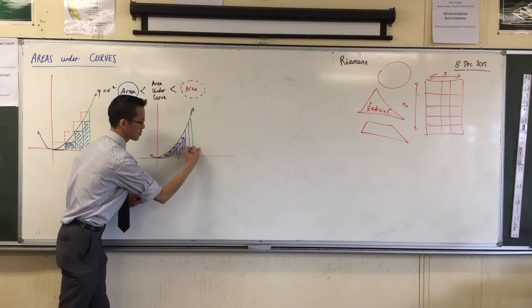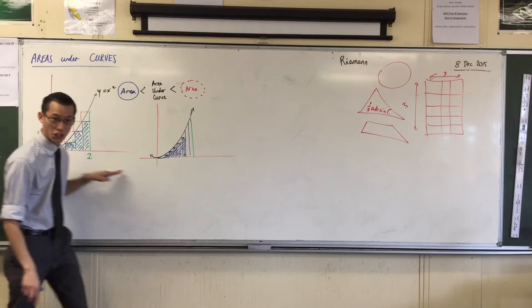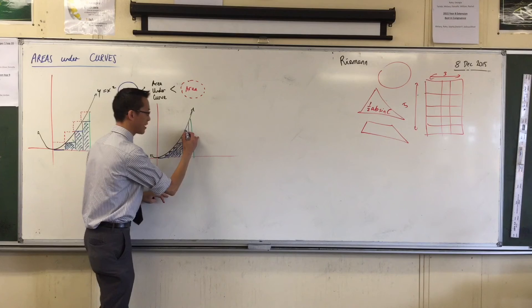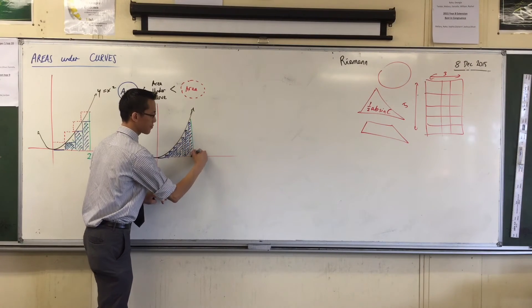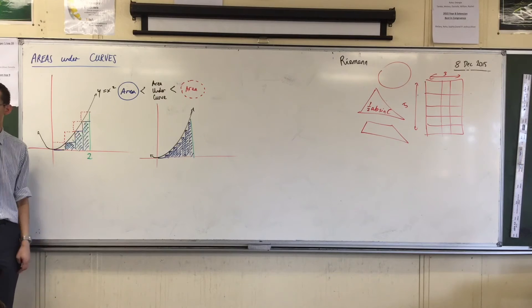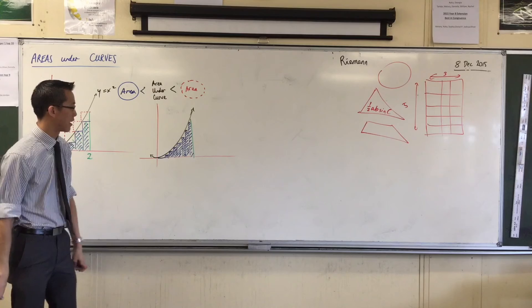What I want you to pay very close attention to is, have a look at those gaps, the difference between the actual area that I want, the curved area, and all of these rectangles that I'm now adding into this diagram. Do you see that these gaps have gotten smaller? Do you notice that? These gaps here are pretty huge. You can see them very obviously. I have more gaps, but they're all smaller. They're all little, little triangles.